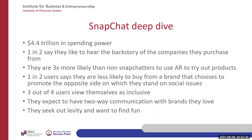Snapchatters are three times more likely than non-Snapchatters to use AR to try out products. At the very basic level, if you're not familiar with Snapchat, the easiest way to think about AR is filters. You can do a geofenced filter so if someone is in your store they can swipe the filter and it'll say they're at such-and-such boutique downtown. You can also use filters for events with a geofence around a specific geographic area. There are also more advanced AR examples, but filters are really the base of it.